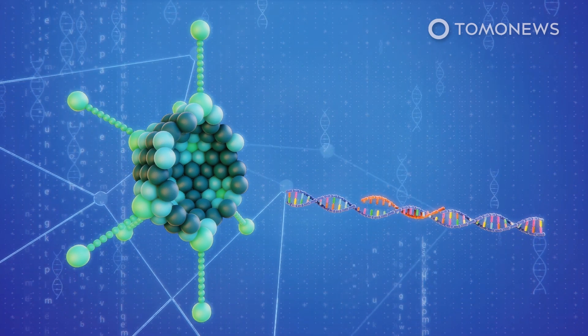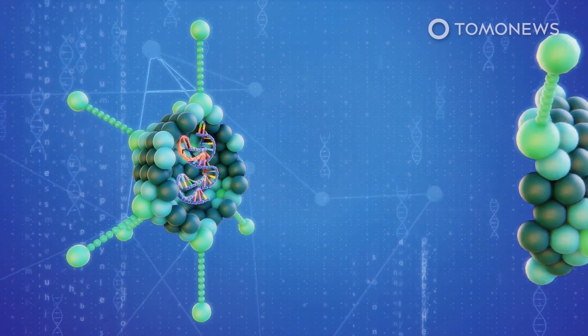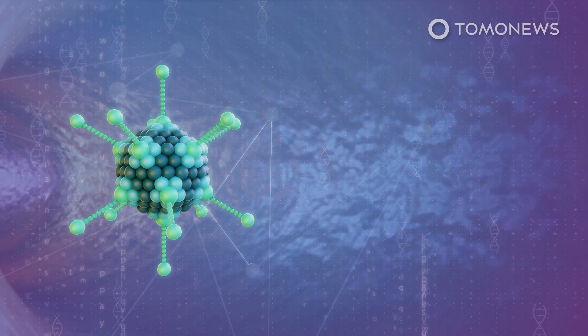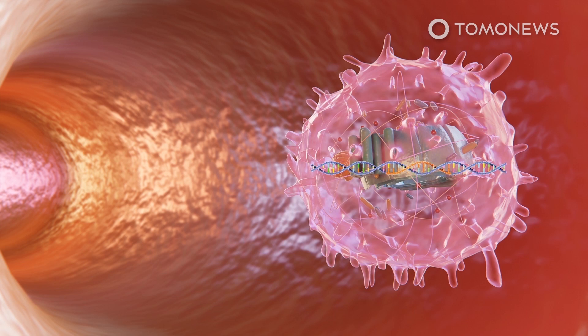The AstraZeneca-Oxford vaccine's chimpanzee adenovirus vector was previously used to make an Ebola vaccine. The chimpanzee adenovirus is genetically modified so that it cannot infect people, while the gene with the code of the spike protein is inserted.